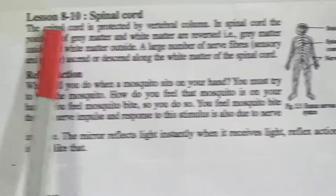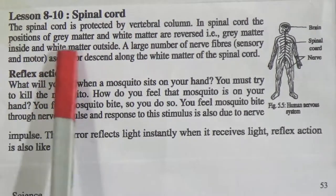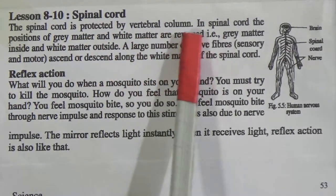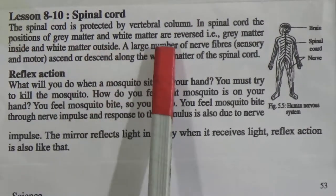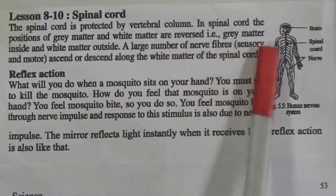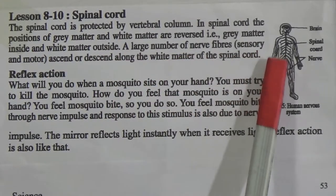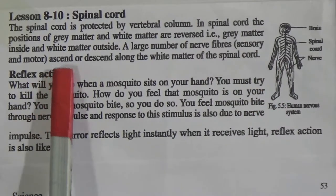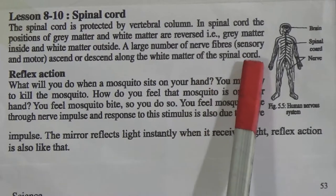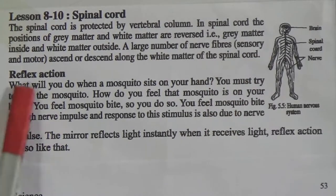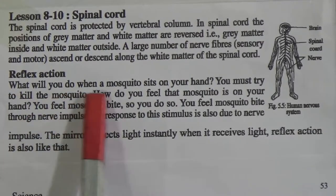Today we will start from lesson 8 to 10. The name of the lesson is Spinal Cord. The spinal cord is protected by the vertebral column. In the spinal cord, the position of gray matter and white matter are reversed — gray matter inside and white matter outside. A large number of nerve fibers, that means sensory and motor, ascend and descend along with the white matter of the spinal cord.